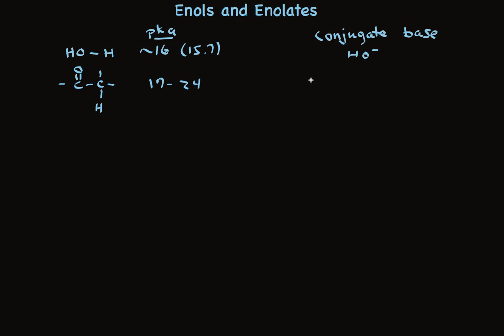The conjugate base has two resonance forms. This puts the negative charge on oxygen, which is really electronegative. And that's the major reason these alpha hydrogens are especially acidic.